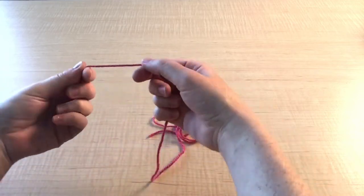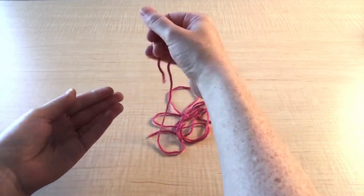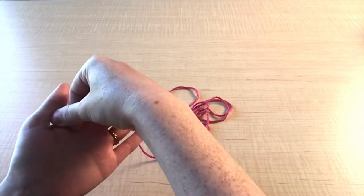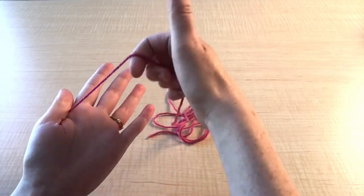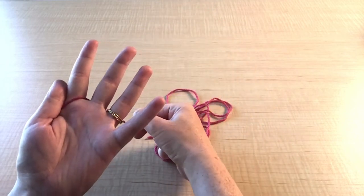So first we'll pick up and hold the yarn in our hand with our thumb holding it down like so. Pull the other end through the middle of your pointer finger and middle finger.